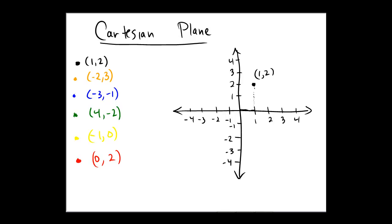Let's change to orange and try the point negative 2, 3. So same philosophy, start at the origin. Negative 2, so it means move two spots left, and then move three spots upward. So this time, there's our dot. There's negative 2, 3.